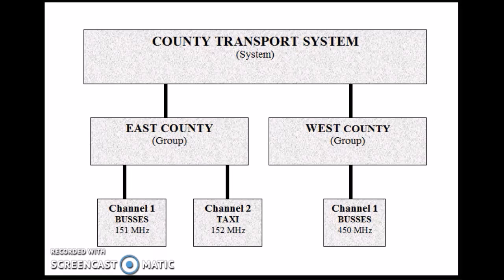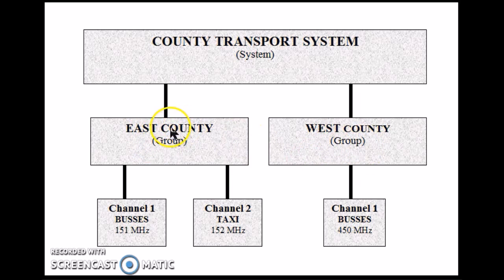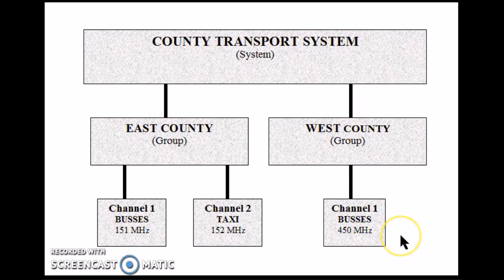Here's a layout that might be used while trying to scan a county transportation system. First, place the county transportation system in the system box. That system has an east county and a west county operation, so you break it up into two groups: east county group and west county group. East county has two channels — channel one for buses at 151 MHz and channel two for taxis at 152 MHz. The west county operation has channel one for buses at 450 MHz. Doing it this way makes it easy to locate in your scanner and easy to identify when your scanner comes alive and starts talking.